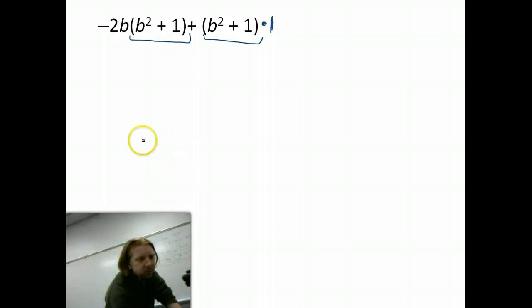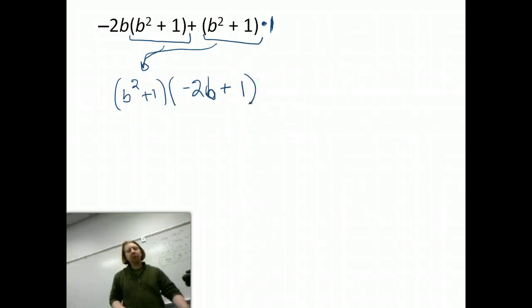So I'll pull it out. That leaves me b squared plus one. I'm going to pull it out of the expression. I'm going to undistribute it. So now what's left? Negative 2b plus one. That's what's left.